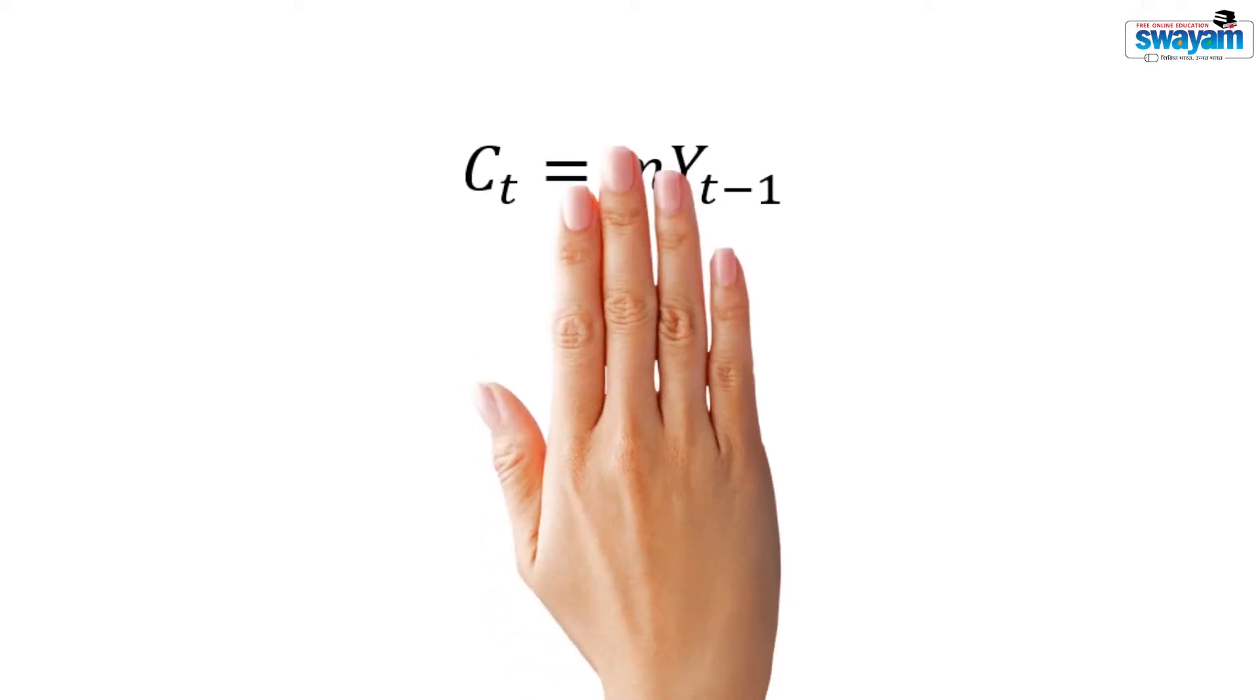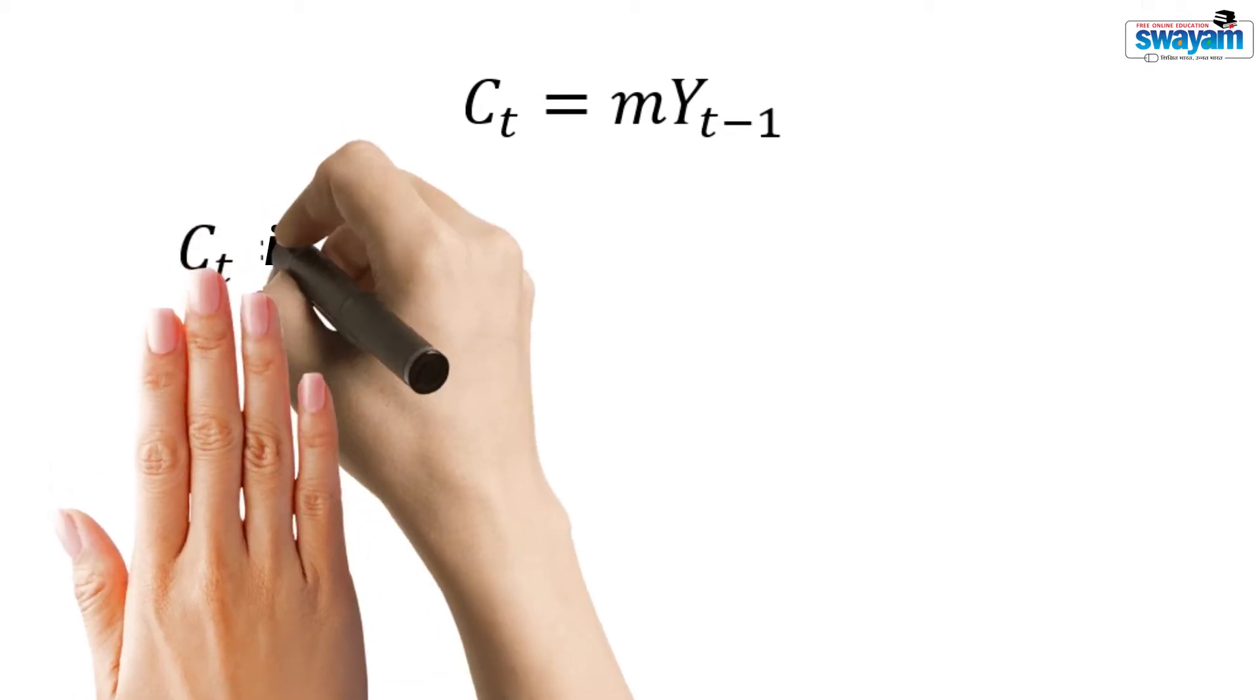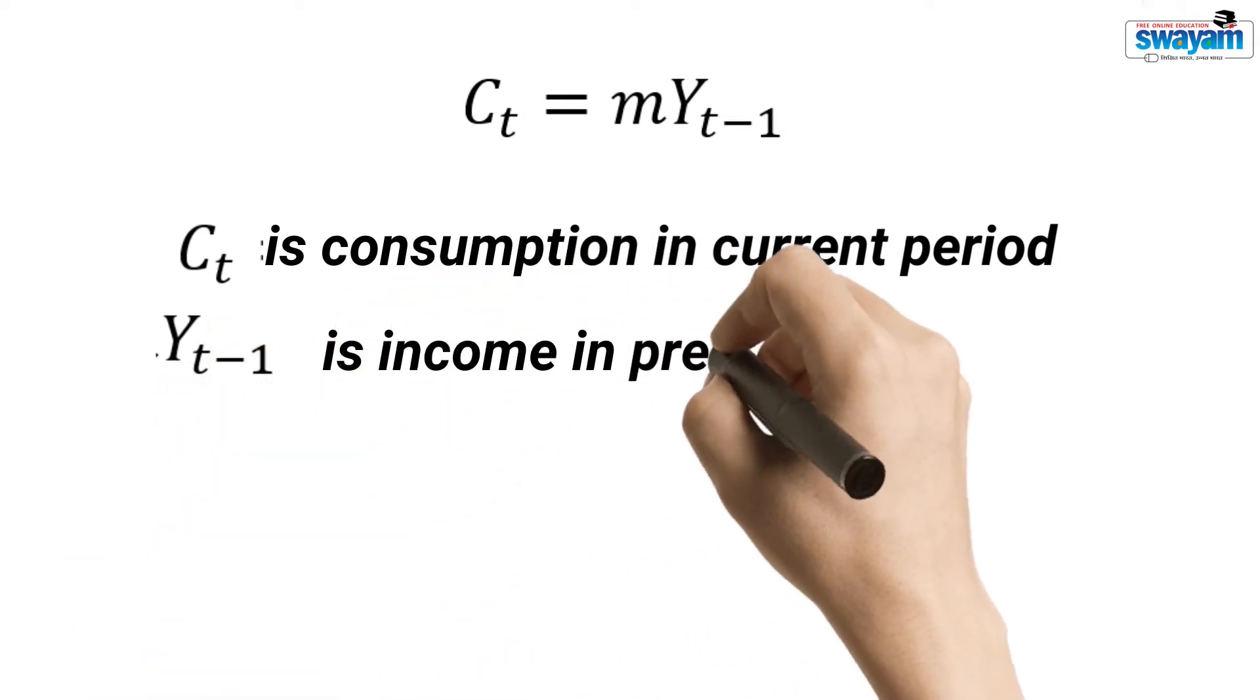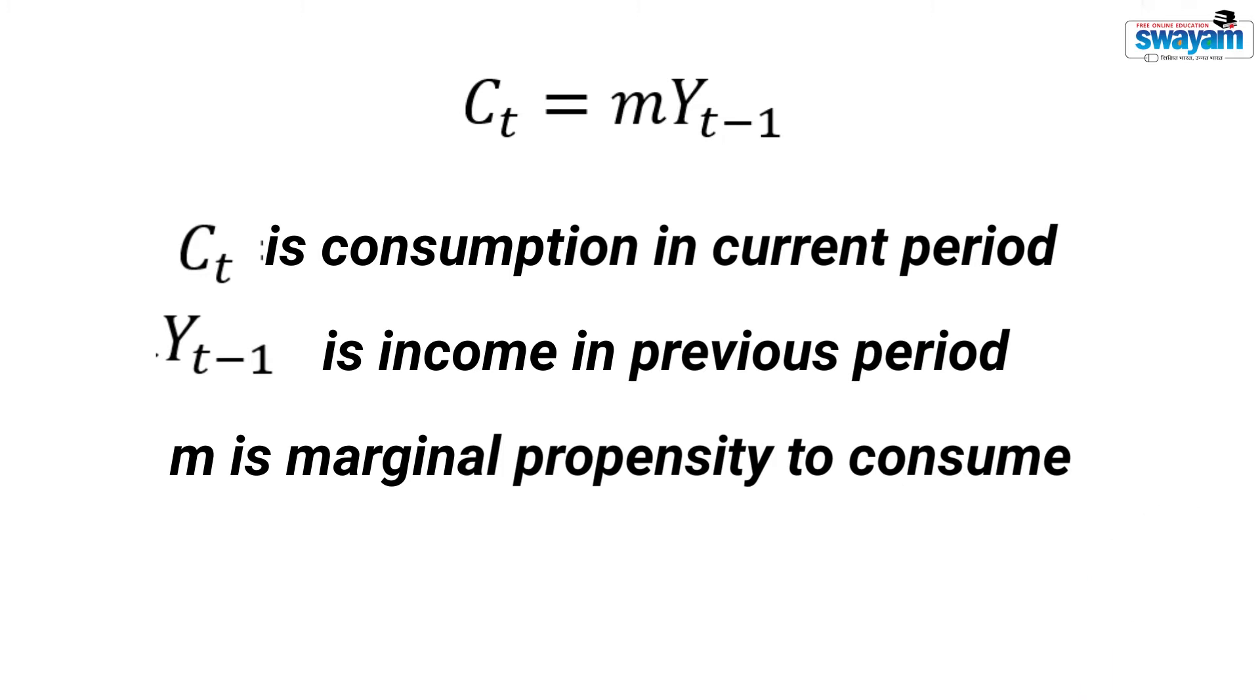Can you interpret this equation? Yes, current consumption depends on the income in the previous period. Ct is consumption in current period, Yt-1 is income in previous period, and M is the marginal propensity to consume.